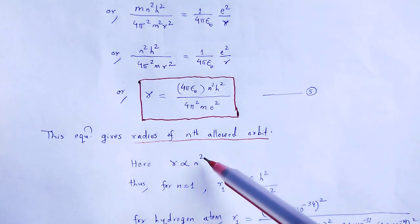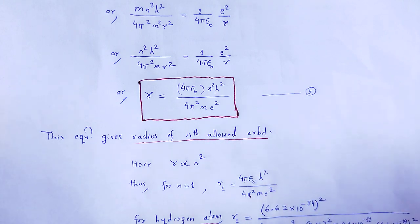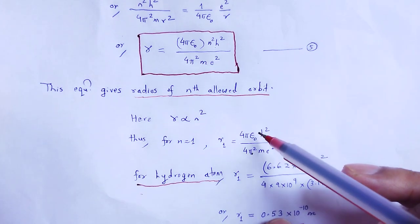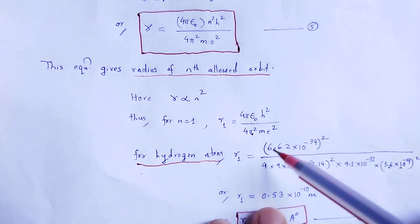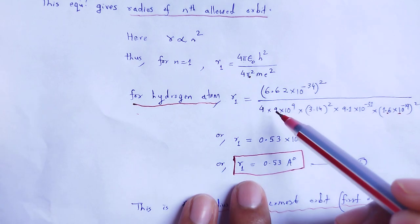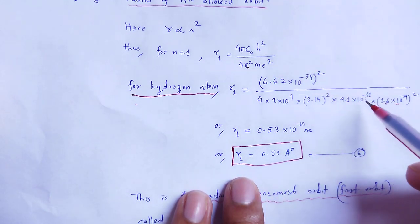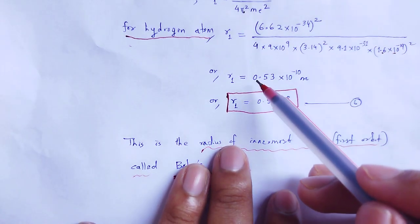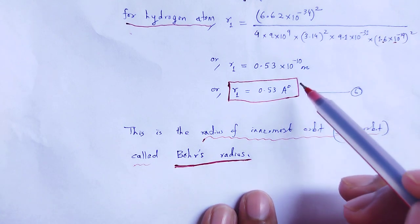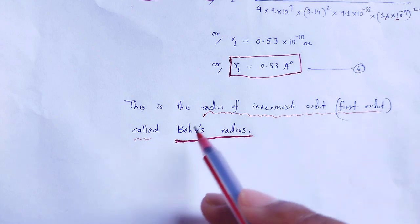For n = 1, we calculate the first radius R₁ for hydrogen atom. Putting in the values — Planck's constant h, mass of electron 9.1 × 10⁻³¹ kg, charge of electron, and other constants — we obtain R₁ = 0.53 × 10⁻¹⁰ m = 0.53 Å, since 1 Å = 10⁻¹⁰ m. This is the radius of the innermost orbit, the first orbit, and is called Bohr's radius.